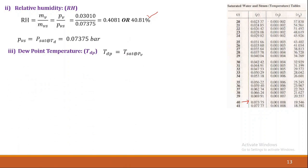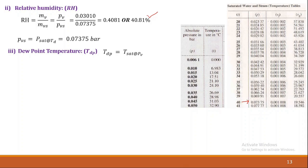Now let us find dew point temperature. Dew point temperature is the saturation temperature corresponding to the partial pressure of water vapor. Partial pressure PV is known as 0.0310 bar. From the steam table using the pressure table, corresponding to 0.0301 bar, we get saturation temperature as 24.10 degrees Celsius. This means the air given in the problem will condense at 24.10 degrees Celsius when temperature is reduced without changing the partial pressure of water vapor.